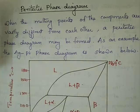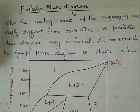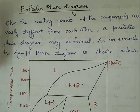Good morning. Our next topic is the peritectic phase diagram. If the melting points of the components are vastly different from each other, we have a peritectic phase diagram. Silver-platinum is an example of a peritectic phase diagram.